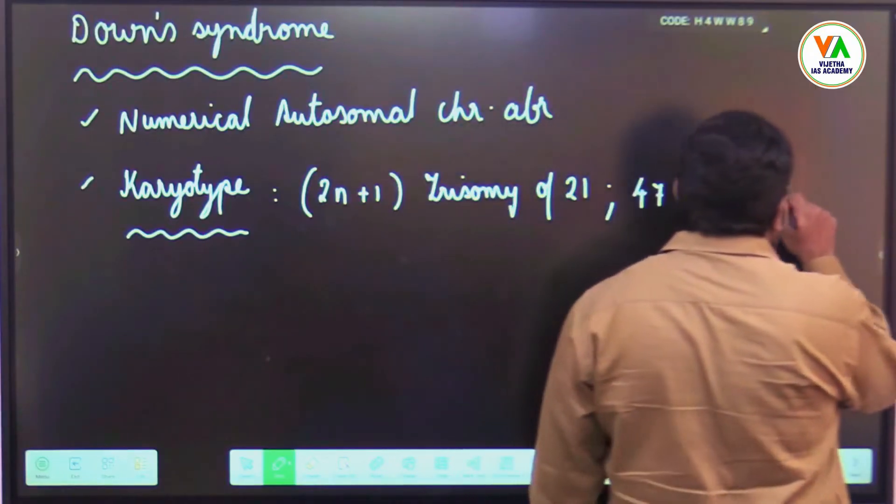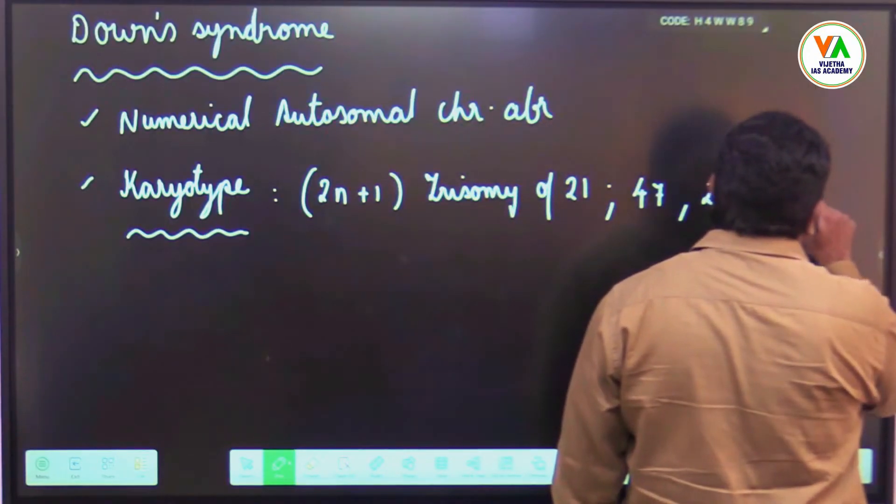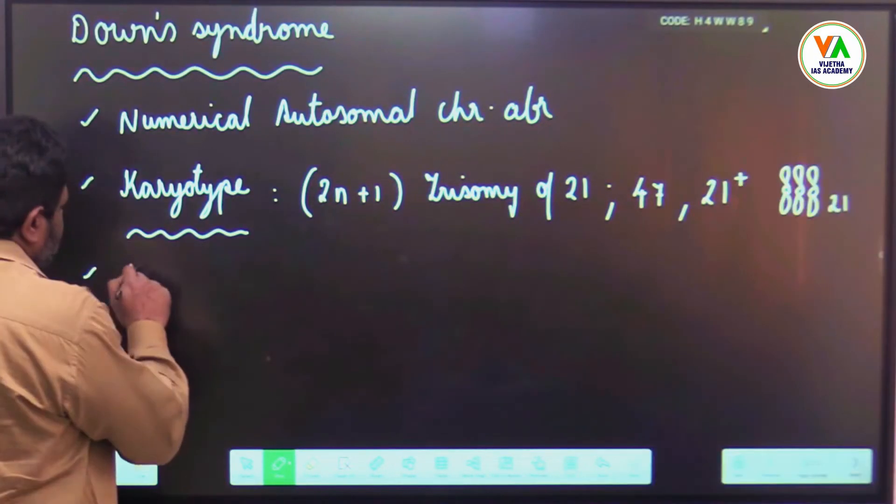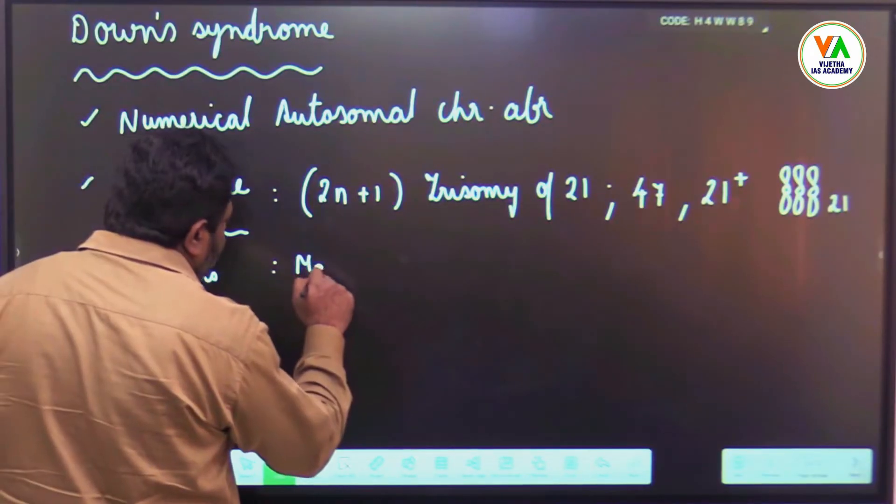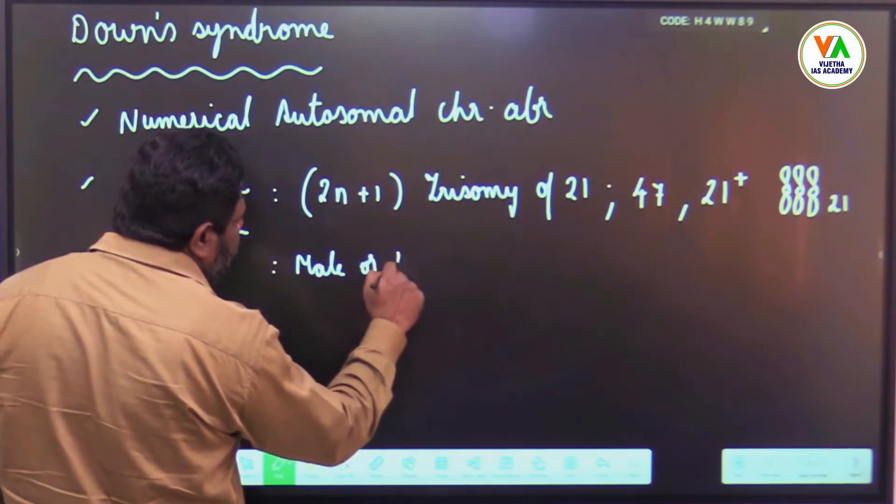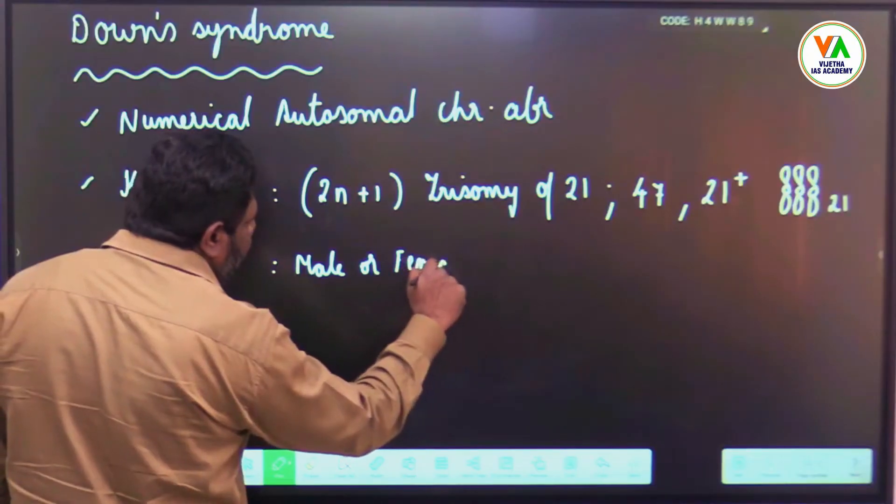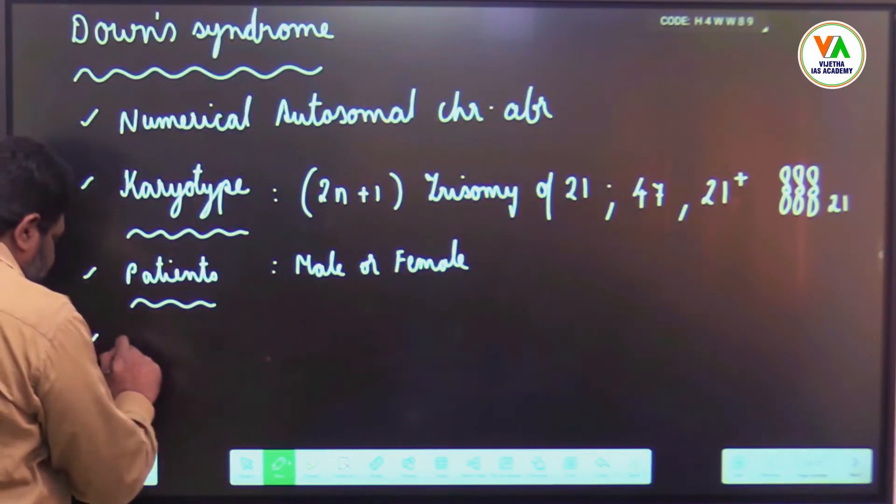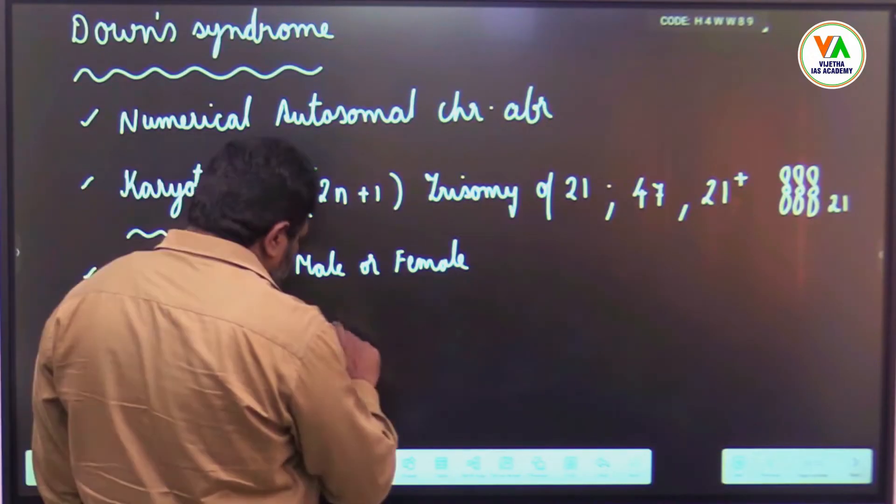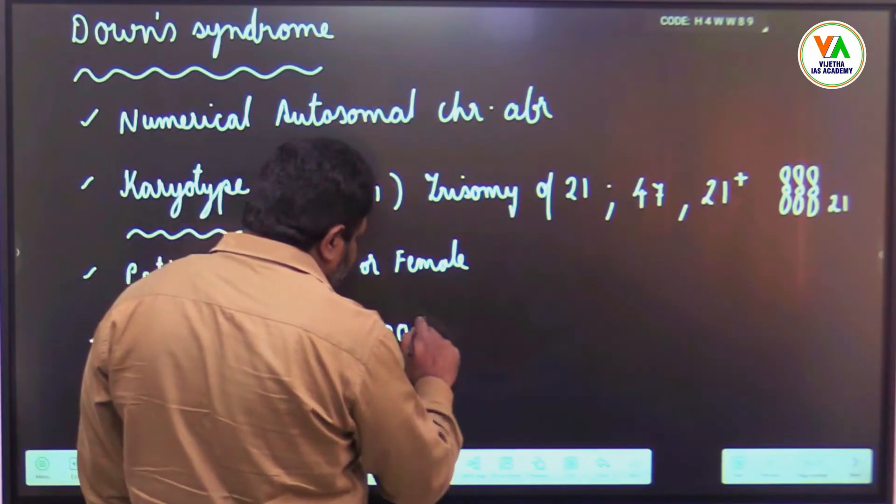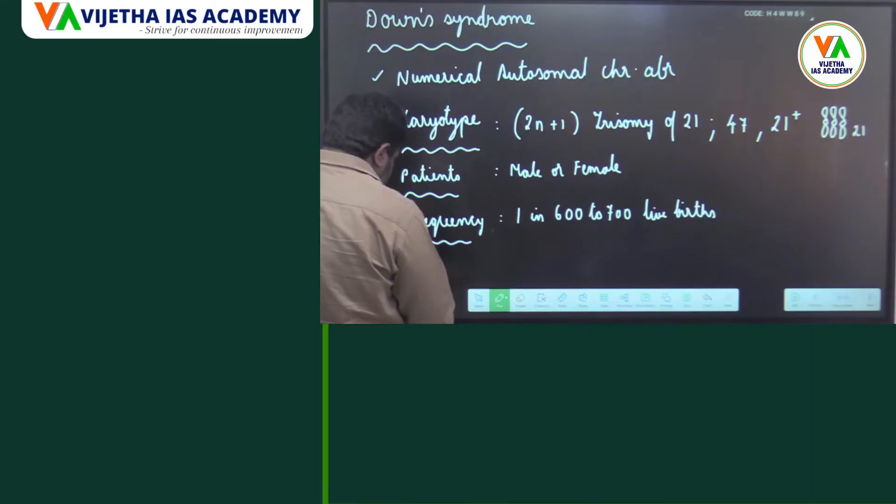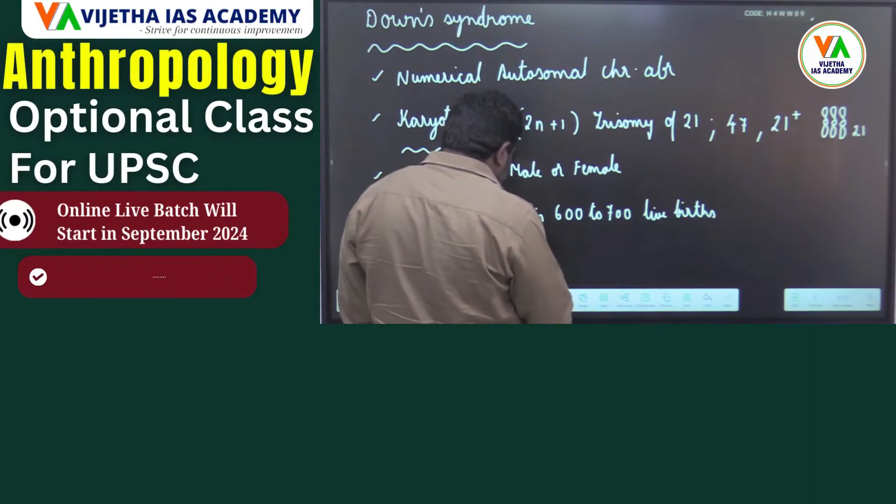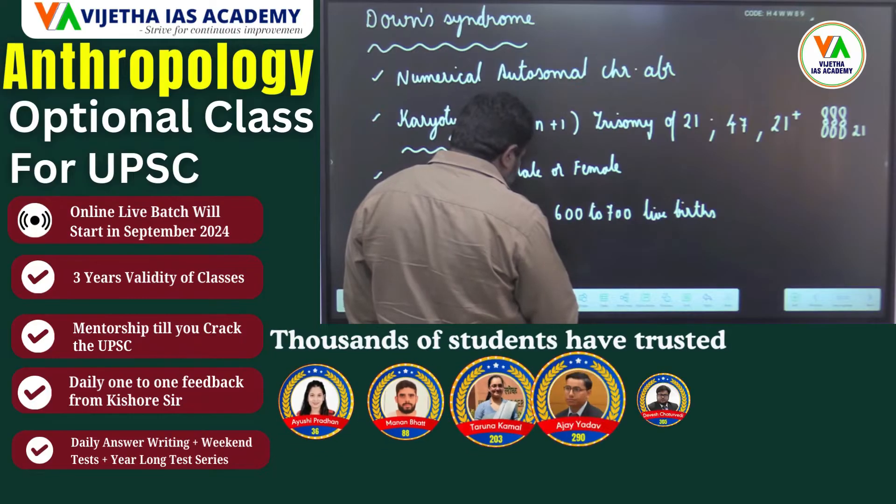Patients can be male or female because it's autosomal. Frequency is one in 600 to 700 live births. Lifespan is generally 10 to 12 years, exceptional cases 40 to 42 years.